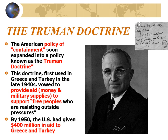The Truman Doctrine was the American policy of containing Soviet expansion, first used in Greece and Turkey in the late 1940s. It vowed to provide money and military supplies to support, quote, 'free peoples who are resisting outside pressures.' In another sense, this is the United States funding rebel armies and military takeovers of any country it doesn't see as friendly to its interests. By 1950, the United States had given $400 million in aid to Greece and Turkey.